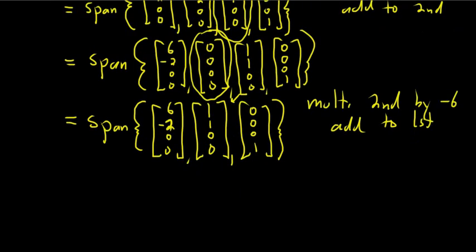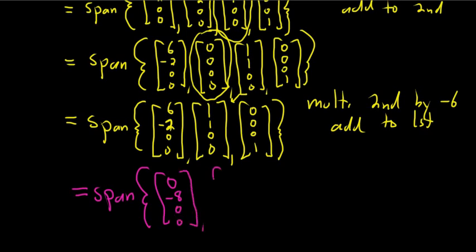So let's do that. Let me change colors here. The yellow is getting out of control. This is equal to the span. So multiplying this by -6. So -6 plus 6 is 0. -6 plus -2 is -8. And the rest of them are zeros. And then here we have [1, 1, 0, 0]. And then here we have [0, 0, 0, 1]. So we've rewritten our span.